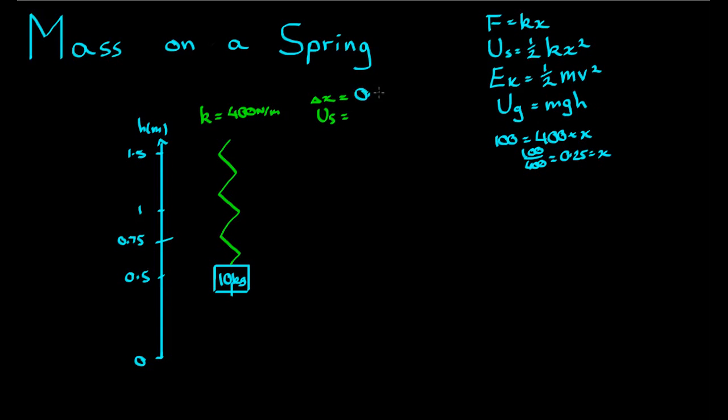How much spring potential energy or strain potential energy is in that spring? Well, the spring potential energy is equal to 1/2 kx squared. So Us is equal to 1/2 times 400. Now we know x, we can work this out. 0.25 squared. That comes to 12.5 joules.